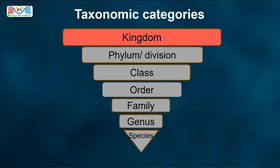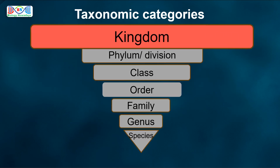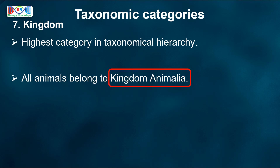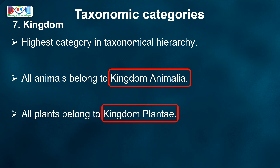Next is Kingdom — the highest category in taxonomical hierarchy. In the case of animals, all animals belonging to various phyla are assigned to the highest category called Kingdom Animalia. In the case of plants, all plants belonging to various divisions are assigned to the highest category called Kingdom Plantae.